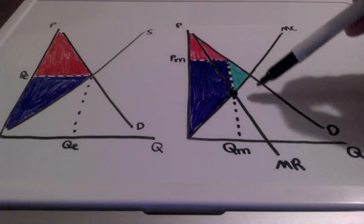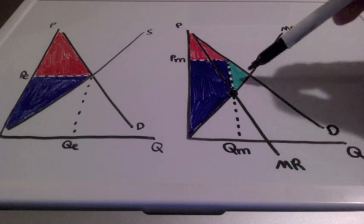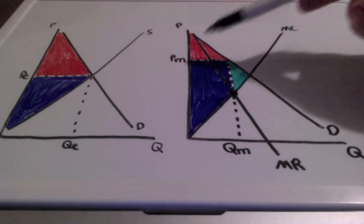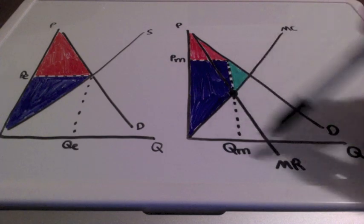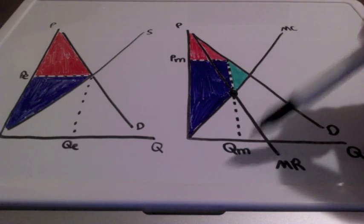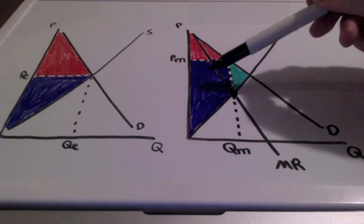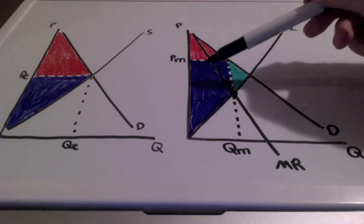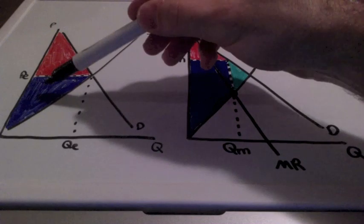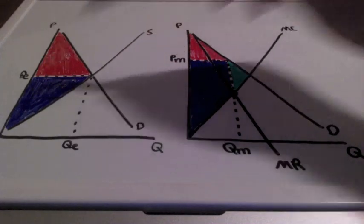And quantity would be much larger. And because the monopoly chooses to keep their prices high and produce a low quantity, producer surplus in blue is going to be much larger for the monopoly in relationship to the perfectly competitive firm.